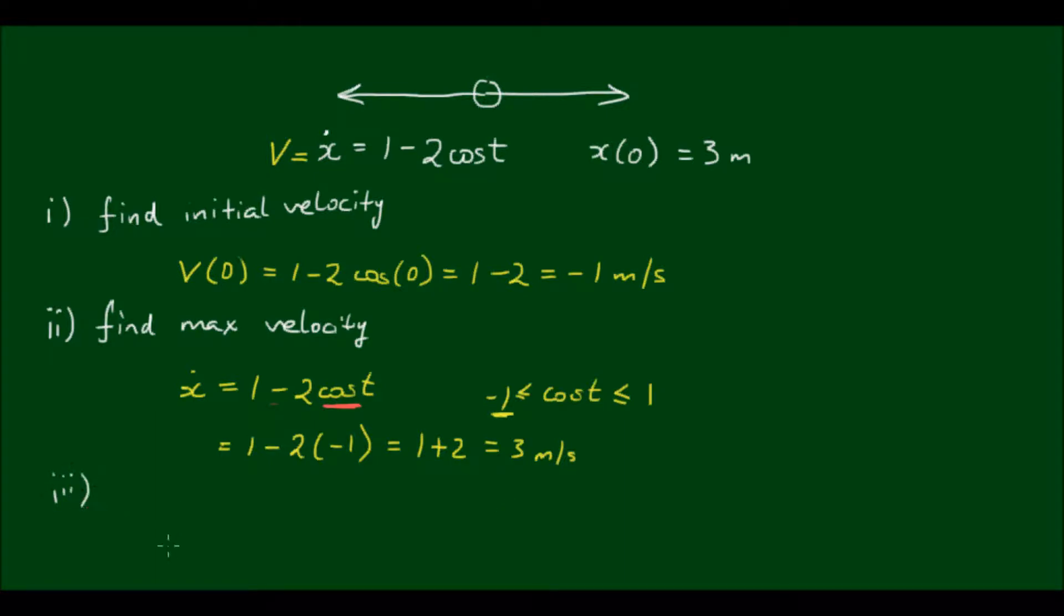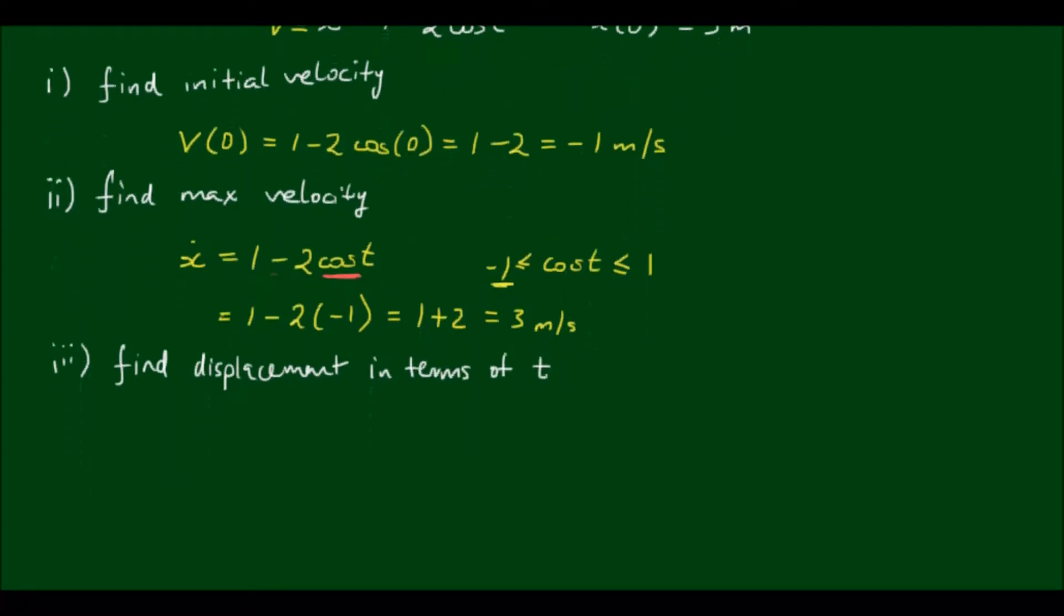The third part of the question is to find the displacement with respect to time. I mentioned before that this ẋ notation equals dx/dt, and it equals 1 minus 2cos(t). What I can do now is rearrange this equation, so dx equals (1 minus 2cos(t))dt. Then I can integrate both sides.